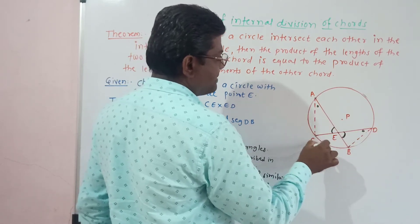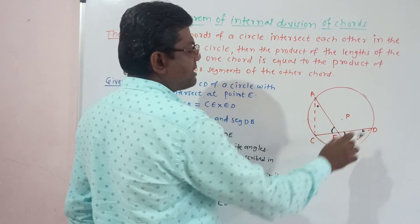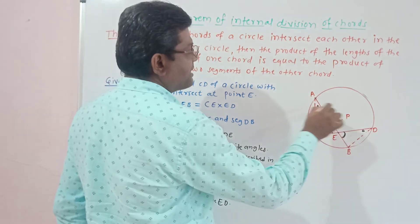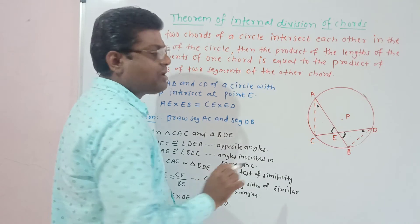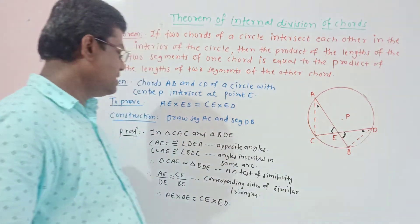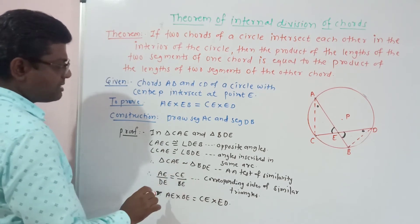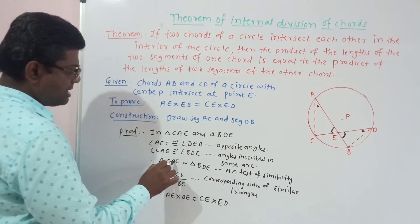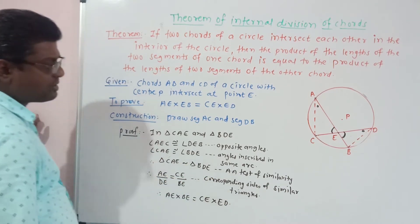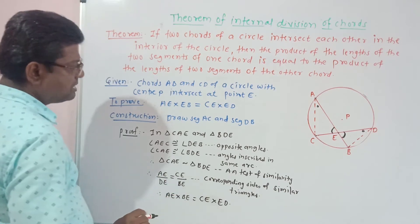Therefore these two angles are angles inscribed in the same arc BC. So in the two triangles, two pairs of angles are congruent — by the AA test of similarity, triangle CAE is similar to triangle BDE. Taking the ratio of corresponding sides: AE/DE = CE/BE. Cross multiplication gives AE × BE = CE × ED. Thus, theorem of internal division of chords is proved.